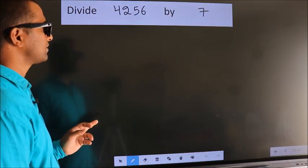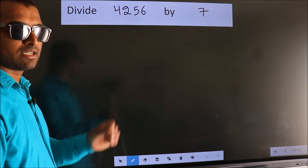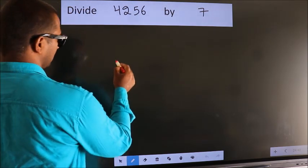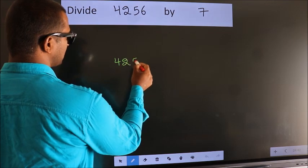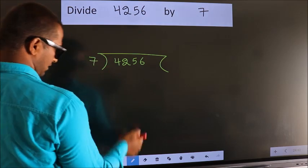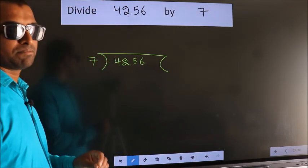Divide 4256 by 7. To do this division, we should frame it in this way: 4256 here, 7 here. This is your step 1.